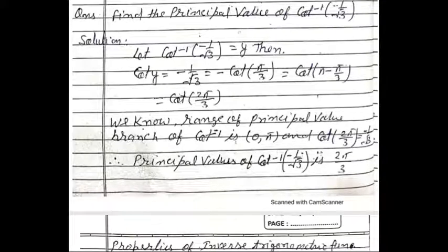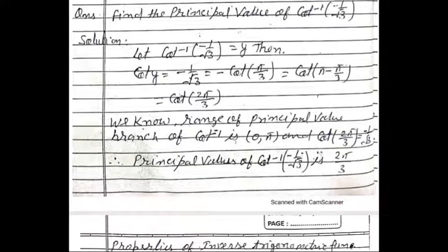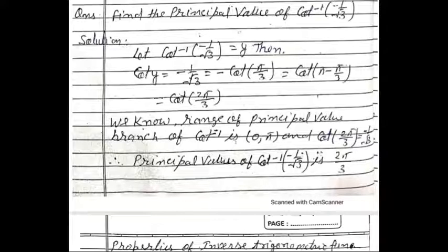Second example: Find the principal value of cot⁻¹(−1/√3). Let cot⁻¹(−1/√3) = y, so cot y = −1/√3. Now, 1/√3 = cot(π/3), but the principal value must accommodate the negative sign, so we use π − π/3 = 2π/3. Therefore, cot(2π/3) = −1/√3.